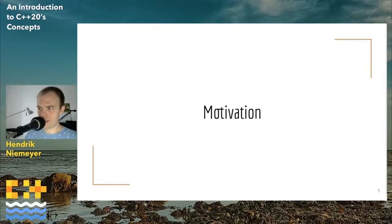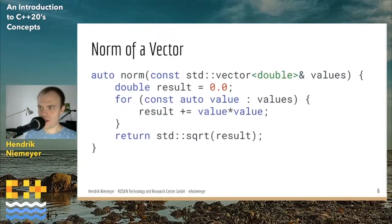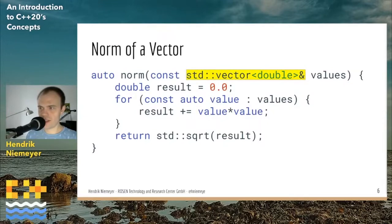So why do we need concepts in C++ at all? Let's walk along an example for implementing generic code and figure out where concepts help us. Our task is implementing a vector norm function for a math library. This first attempt is functionally correct — it takes some values, squares them, adds them up, and returns the square root. But the problem is it only works for a std::vector of doubles, which is way too specific.